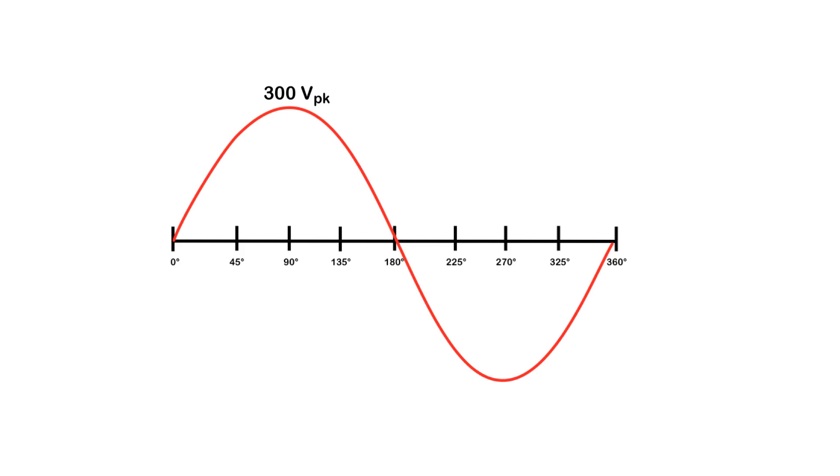If I wanted to work out what the average value was for one alternation, I would take 300 volts and times that by 0.637. 300 times 0.637 is equal to 191.1 volts. And that's how you calculate out the average value for one alternation.